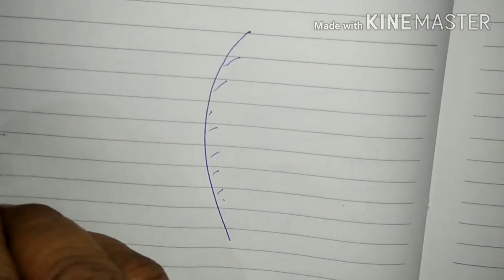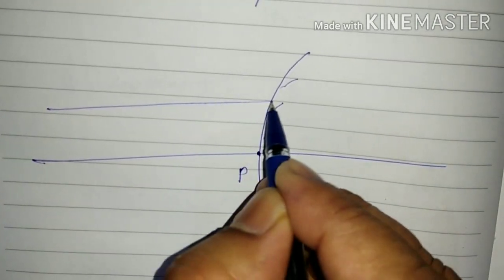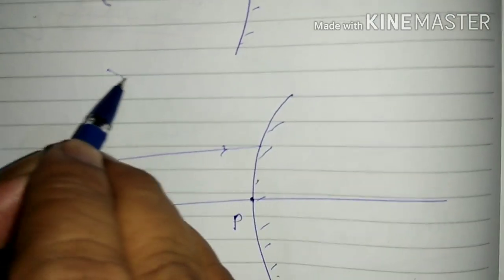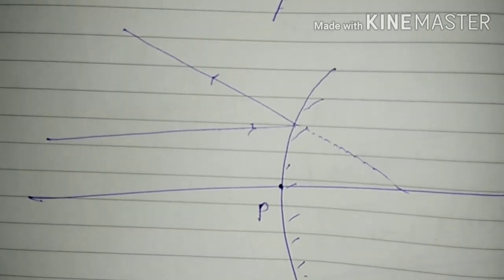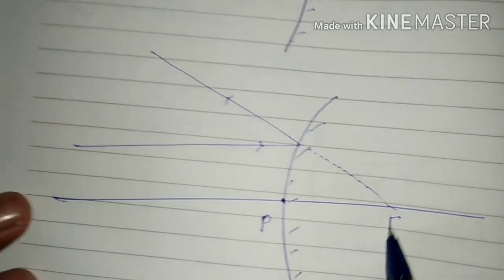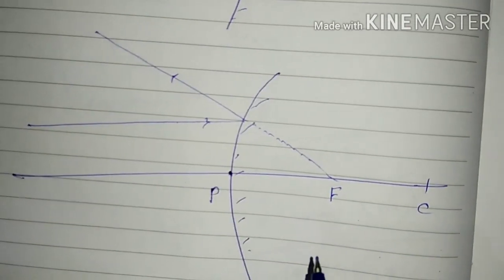What happens in the case of a convex mirror? Rays of light parallel to the principal axis, after reflection, diverge in such a way that if proceeded back, they appear to meet at a point, and this point is called the focus.